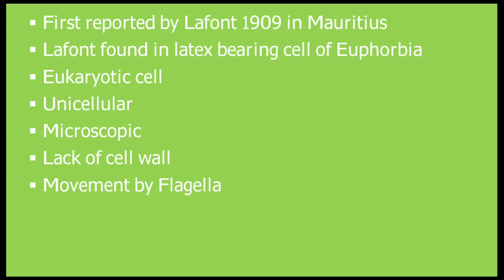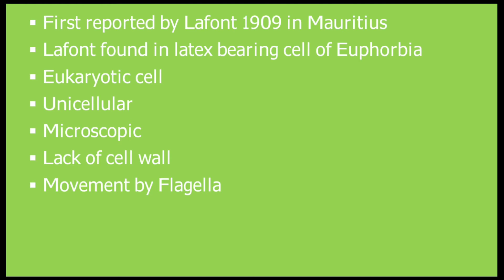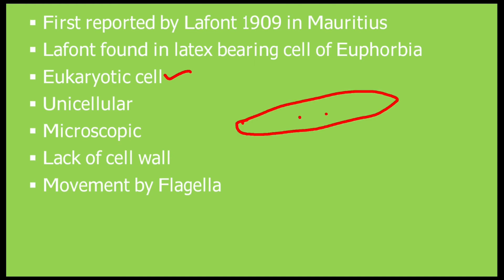Characteristics of Flagellated Protozoa: They are eukaryotic cells. They are unicellular — a single cell carries out all life functions. They are microscopic and cannot be seen with the naked eye; a microscope is required. They lack a cell wall.